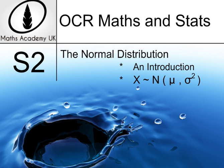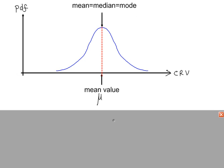An introduction to the normal probability distribution. The sketch here shows a normal distribution with this familiar bell-shaped curve, and as we can see it's totally symmetrical about the center, so the distribution is symmetrical about the mean.